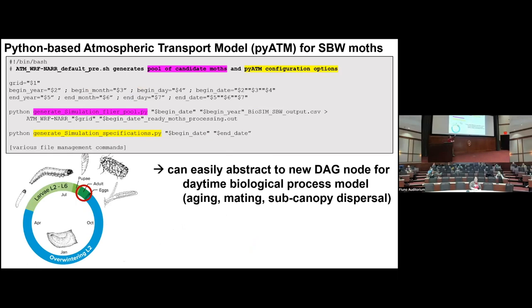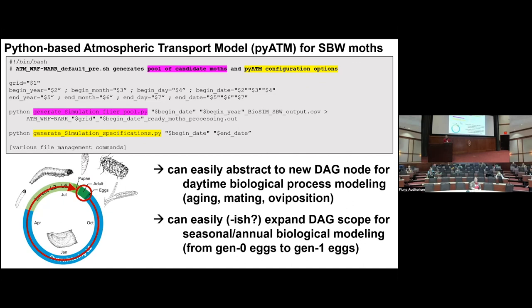I love this because I can easily take the pre-processing part of the DAG out and make it its own DAG node so we can build in more biological processes for that daytime part of the model — aging, mating, subcanopy dispersal, oviposition that depends on temperature, and all sorts of things like that. We can also expand the entire scope to more easily cover the full year's biological cycle, which is a lot more biological modeling I'll be tackling over the next year or so.